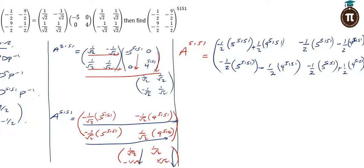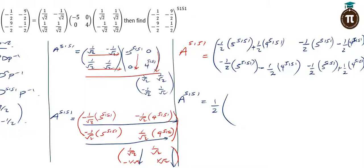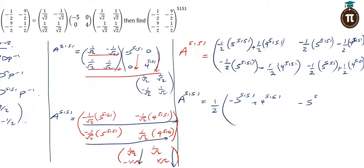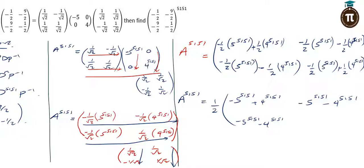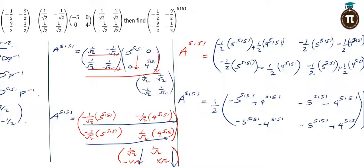You will see that 1 over 2 is common in all the entries. Factorizing 1 over 2 out, A^5151 equals 1 over 2 times the matrix: first entry minus 5^5151 plus 4^5151, second entry minus 5^5151 minus 4^5151, third entry minus 5^5151 minus 4^5151, fourth entry minus 5^5151 plus 4^5151. And that is actually the answer.